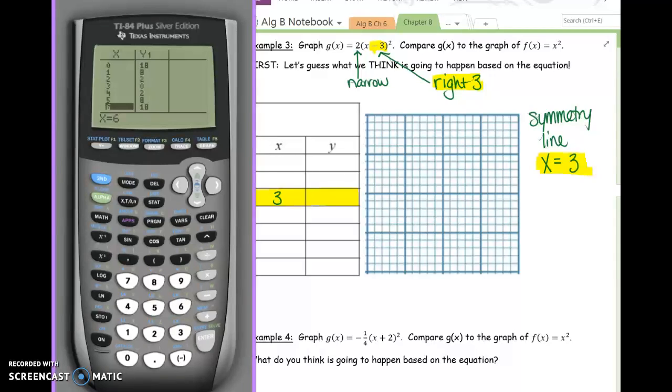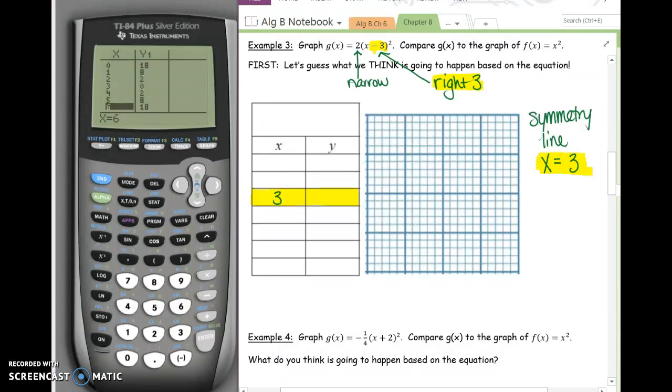And I'm hoping that when you get to 3 in the table, you'll start to see the symmetry on the Y column. So I'm going to use the points 3, 0. Once you have example 3 graphed, I want you to look at example 4 and try it on your own.